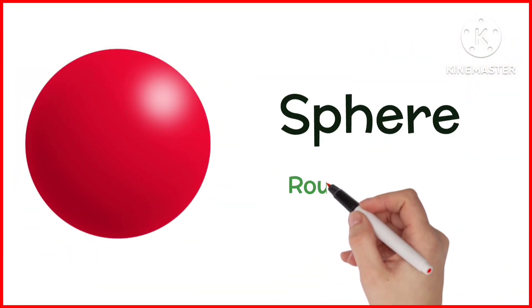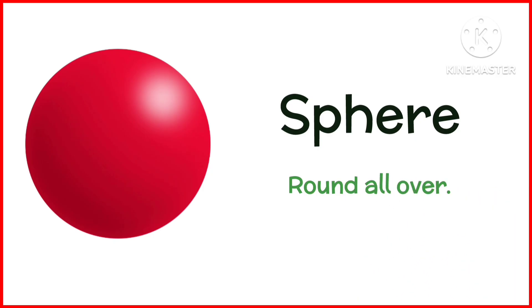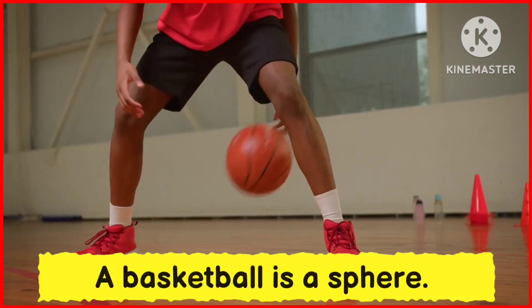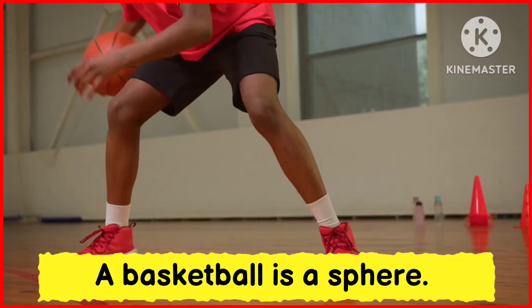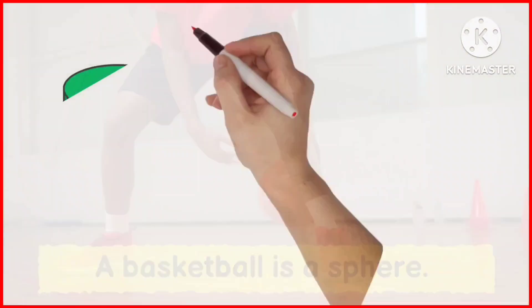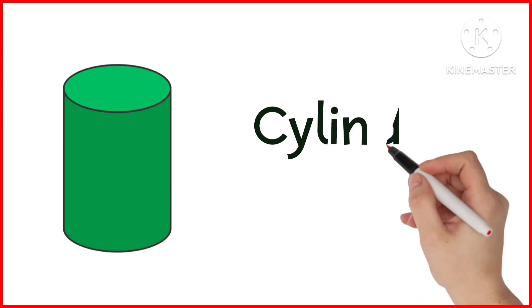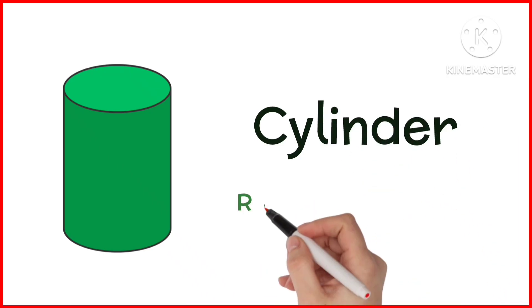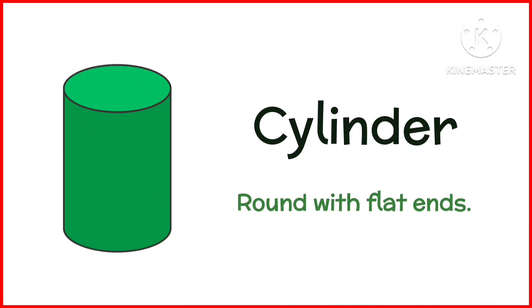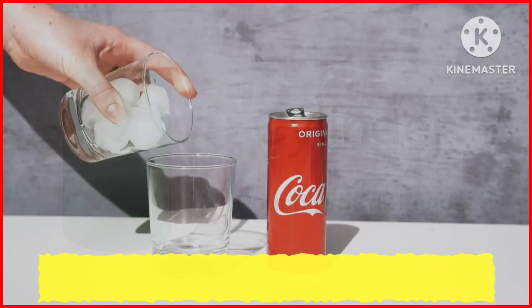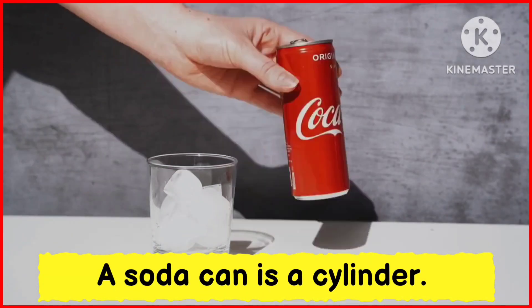Sphere. Sphere is a shape round all over. A basketball is a sphere. Cylinder. Cylinder is round with flat ends. A soda can is a cylinder.